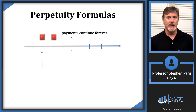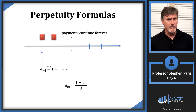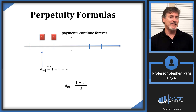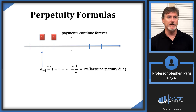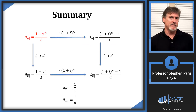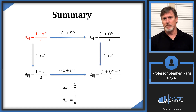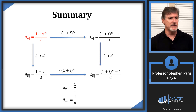Changing the valuation date gives a perpetuity due with present value a-double-dot angle infinity. The VEP expression is one plus v and so forth. Using the a-double-dot angle n formula — (one minus v to the n)/d — and plugging in infinity for n so that v to the n goes to zero, the closed-form formula for a-double-dot angle infinity is one over d. The final summary slide highlights in red the one base formula from which everything else is derived: a angle n equals (1 minus v^n)/i.